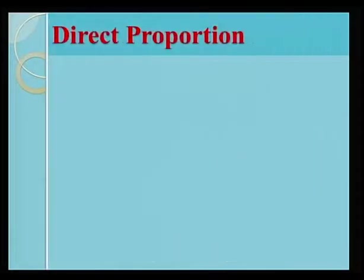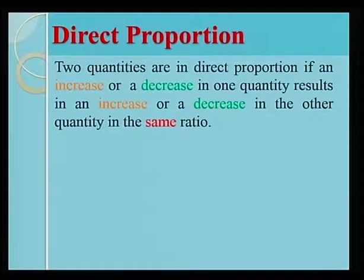We now look at the definition of direct proportion. Two quantities are in direct proportion if an increase or a decrease in one quantity results in an increase or a decrease in the other quantity in the same ratio.